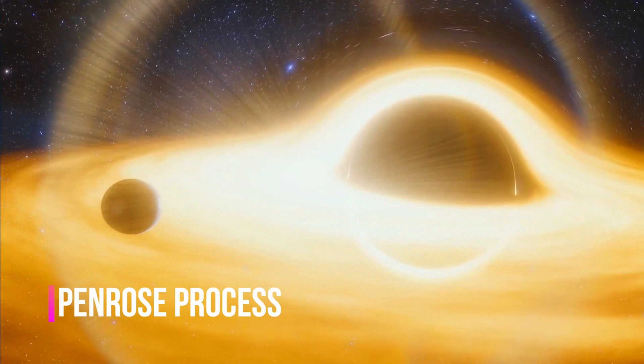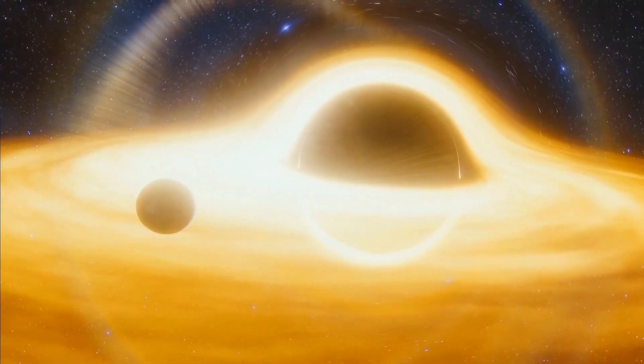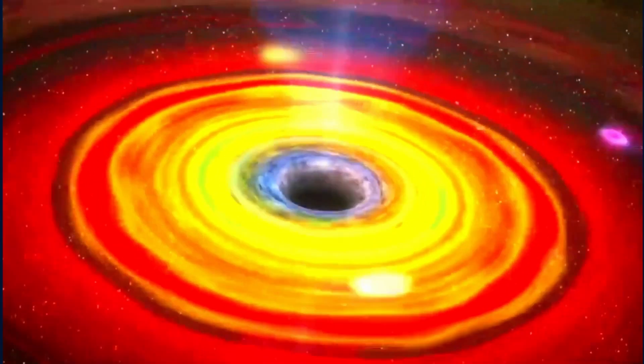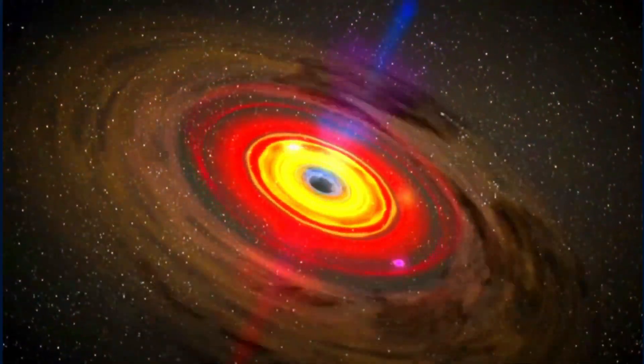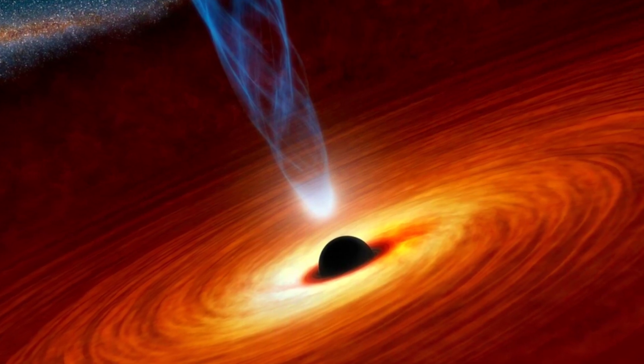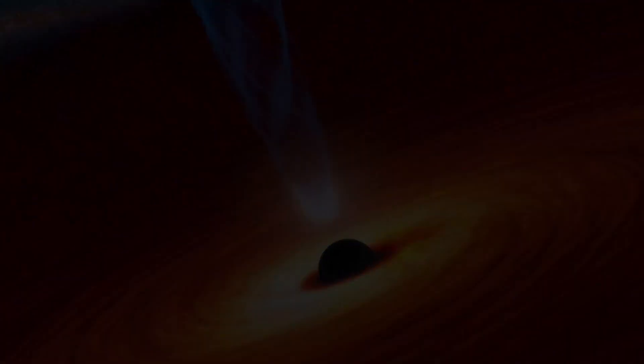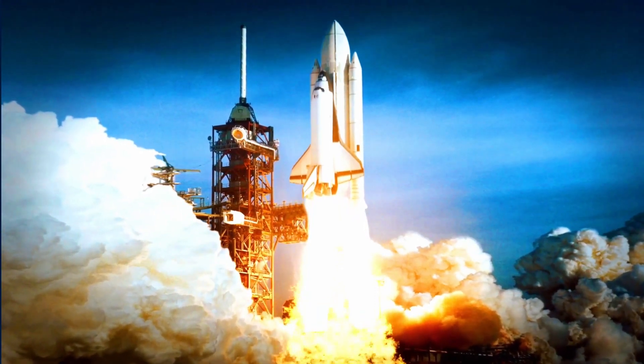This is known as the Penrose Process, and it can extract roughly 29% of the energy in a black hole. However, there is a drawback to this method. A black hole will start spinning slower and eventually stop. But it also opens up the possibility of harnessing Hawking radiation from evaporating black holes, which is far beyond our capabilities, but not rocket science for a Type III civilization.